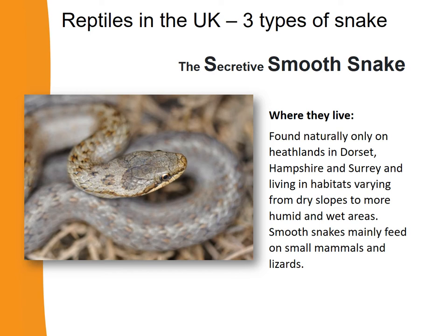Smooth snakes are found in some areas in the south of England, and they live in habitats varying from dry slopes to humid and wet areas, but it's always within a heathland. What does that heathland give them in terms of food? Well, smooth snakes mainly feed on small mammals and lizards.